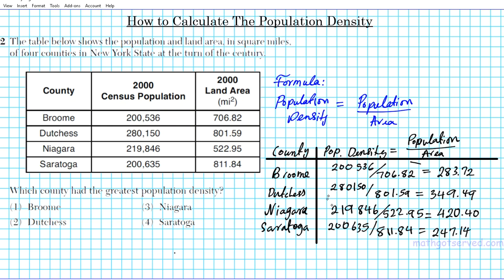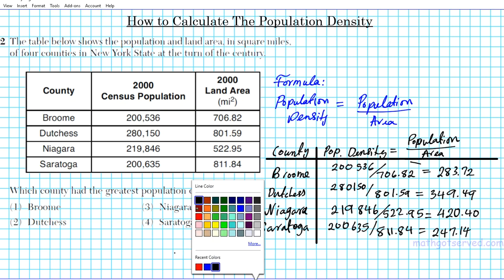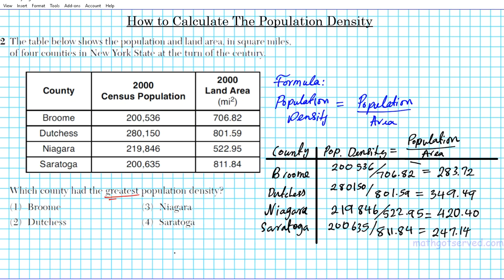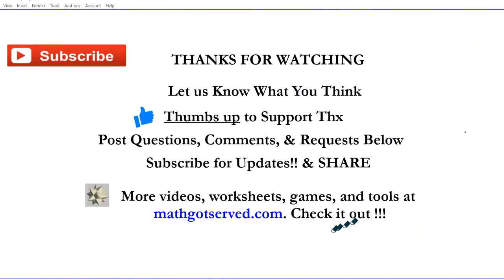The question asks which county has the greatest population density, so we're looking for the biggest value. The biggest answer is 420.40, which belongs to Niagara County. So the answer to question number two is option number three.